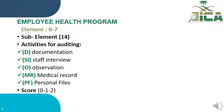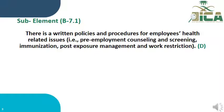We will go through different activities during the auditing round. We will go through documentation, staff interview, and observation. We will also review medical records in some sub-elements and the personal file of the employee. The first sub-element, number B7.1, addresses written policies and procedures for employee health-related issues, such as pre-employment counseling and screening, immunization, post-exposure management, and work restriction. This sub-element is assessed through document review only.